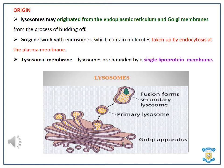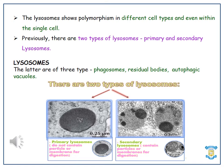Lysosomes contain molecules taken up by endocytosis at the plasma membrane. Lysosomal membranes are bounded by a single lipoprotein membrane. The lysosome shows polymorphism in different cell types and even within the single cell. Previously, there were two types of lysosomes: primary and secondary lysosomes. The lysosomes are later classified into three types: phagosomes, residual bodies, and autophagic vacuoles.